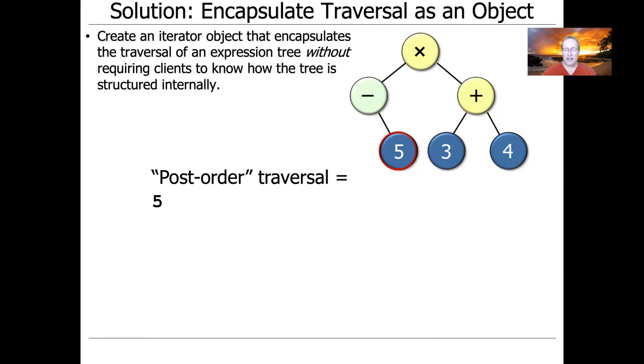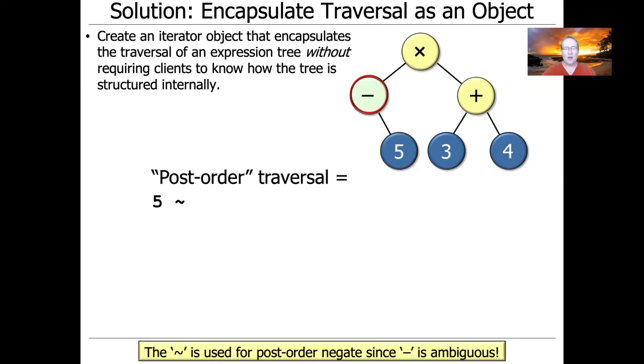So five gets printed, then we continue back up the tree, minus gets printed, and we print this out as a little squiggle or a tilde. I guess it's the squiggle character. And we use that in post-order traversal because minus is ambiguous in post-order traversal.